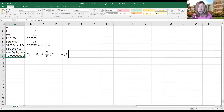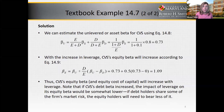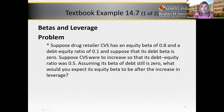So CVS's equity beta and equity cost of capital will increase with leverage. Note that if CVS's debt beta increased from zero, the impact of leverage on its equity beta would be somewhat lower — if debt holders share some of the firm's market risk, the equity holders will need to bear less of it. You can use this example in a problem and also in a case.